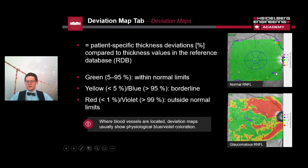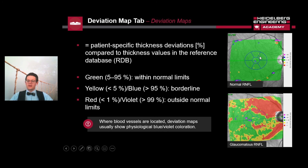Red and yellow areas represent percentile values of less than 1% and less than 5% respectively, while blue and purple areas represent percentile values of more than 95% or more than 99% respectively. Please note that it is common to see blue and purple colors due to the presence of blood vessels. Green areas represent percentile values between 5 and 95%, which we would call normal values.